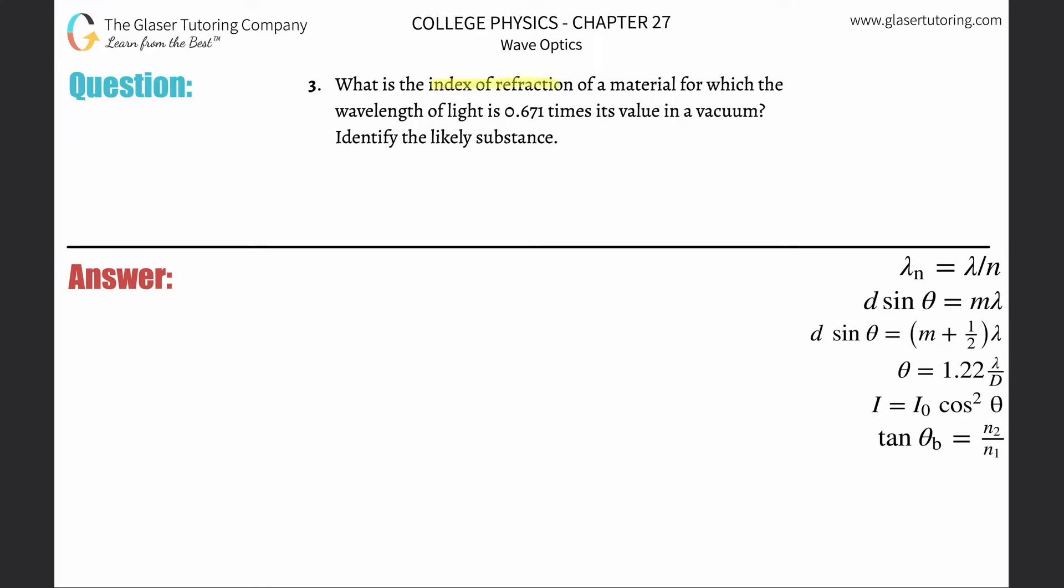Number three, what is the index of refraction of a material for which the wavelength of light is 0.671 times its value in a vacuum? And then we got to identify it.